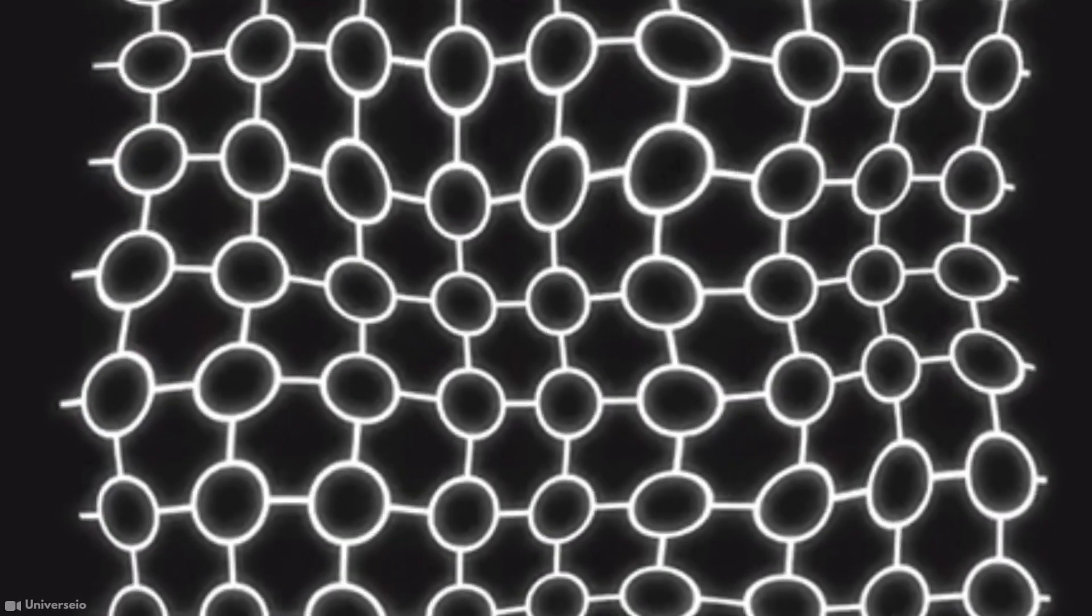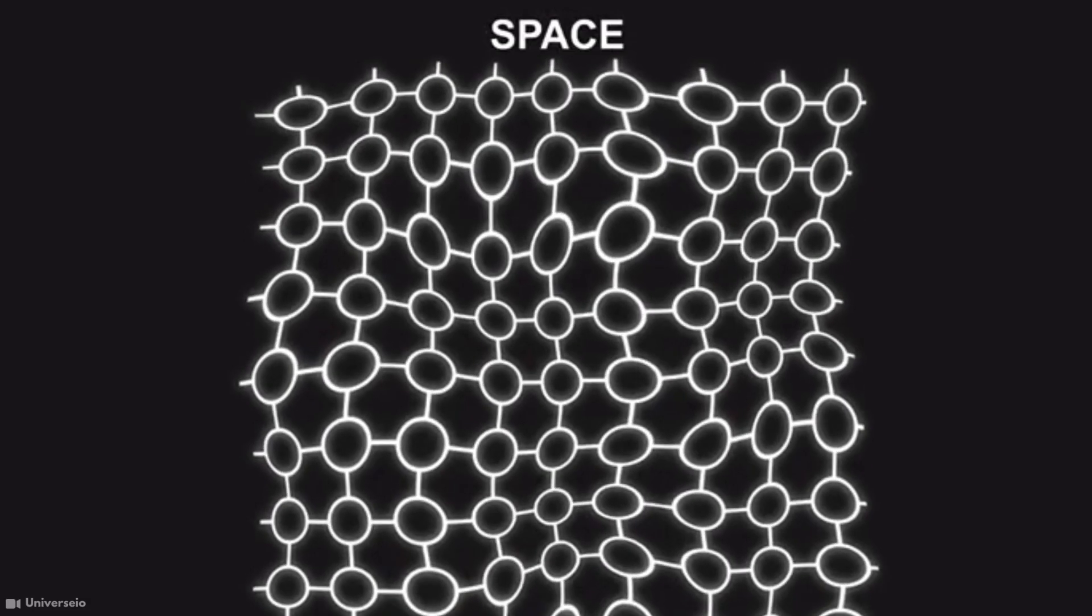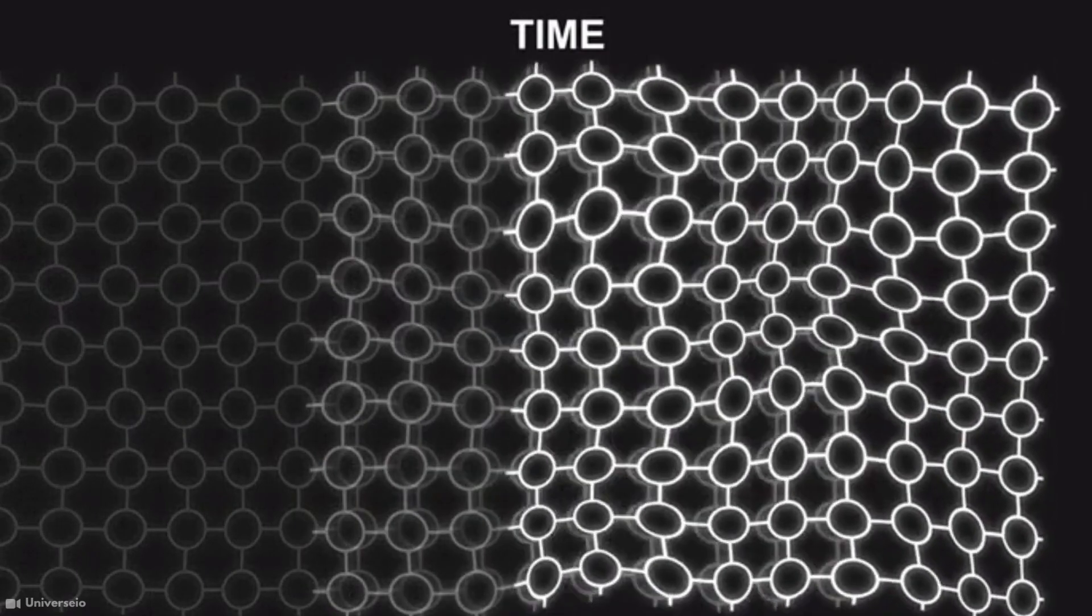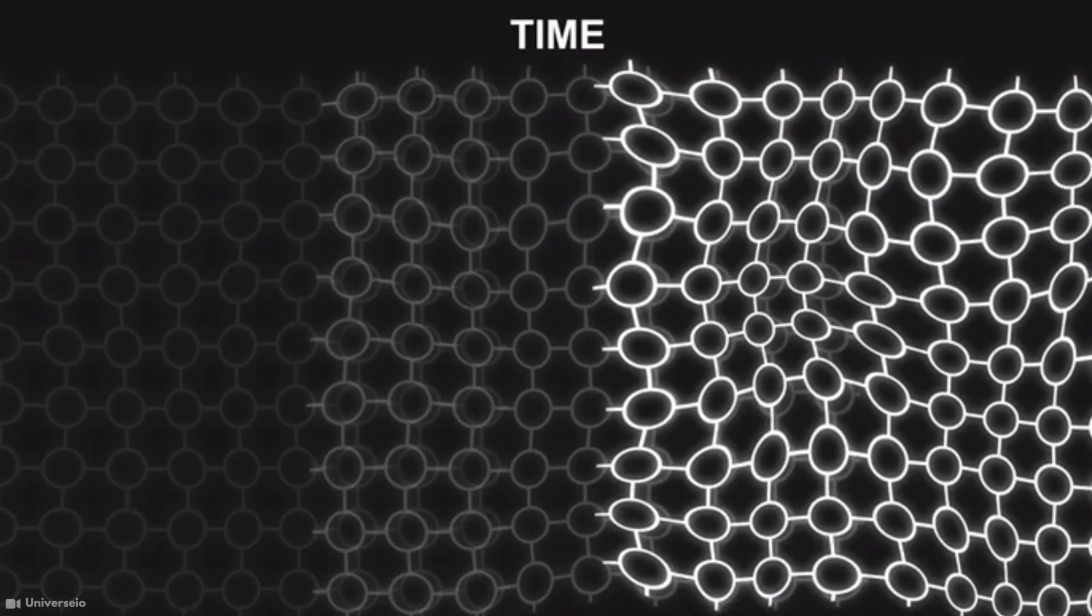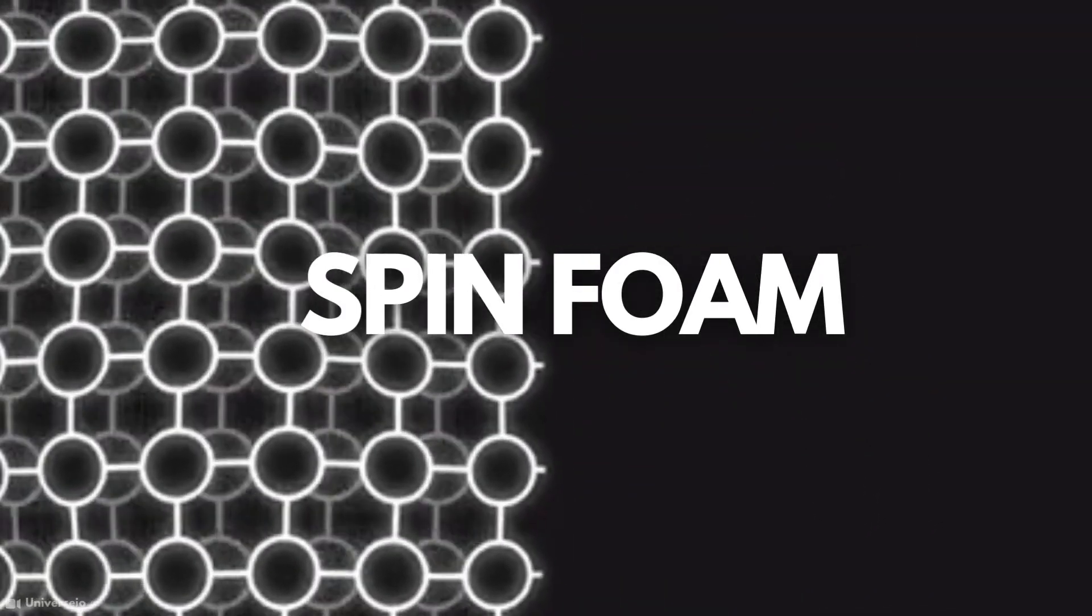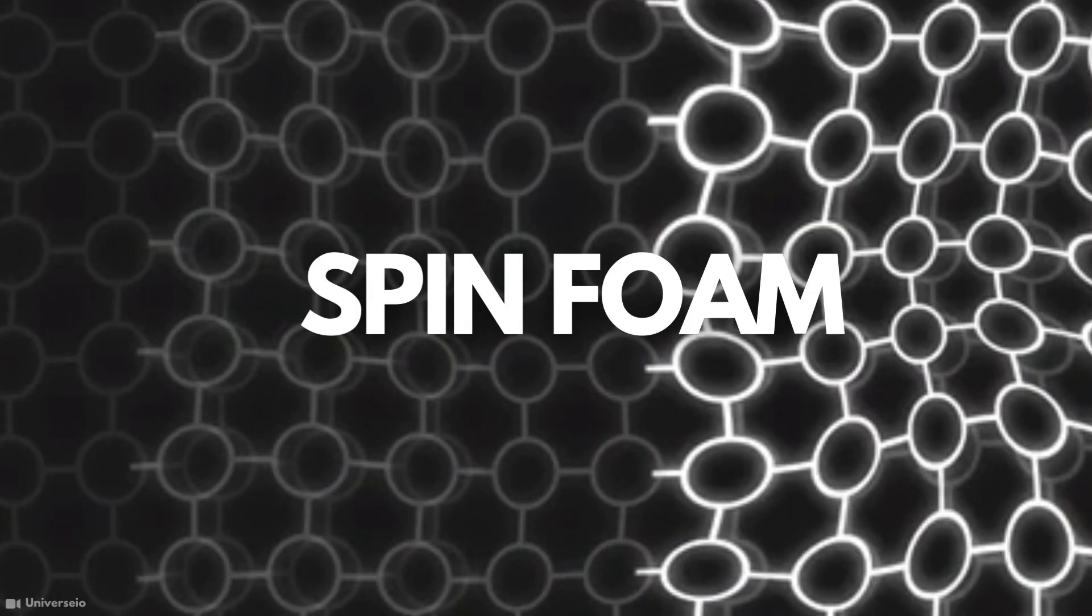In loop quantum gravity, space-time is made up of finite loops with nodes connecting them. Large quantities of these loops are called spin networks. Space can be thought of as the geometry of spin networks and time as motion that rearranges spin networks. The spin network plus the movement is spin foam. This is an integral description of loop quantum gravity.